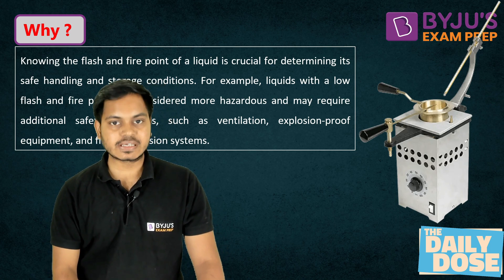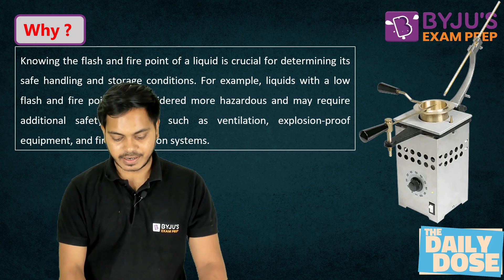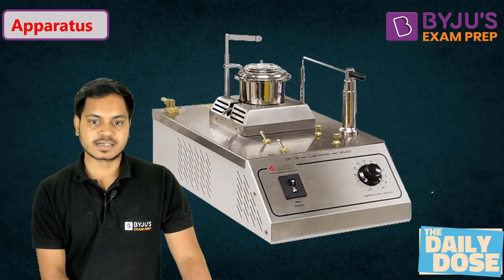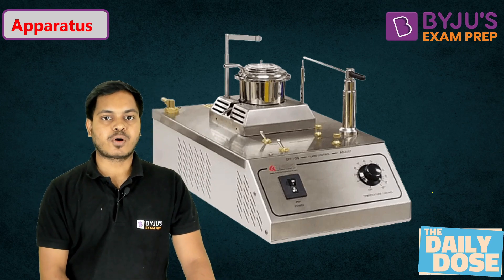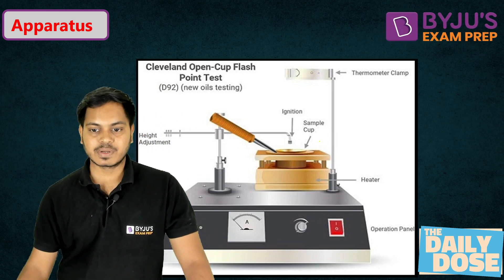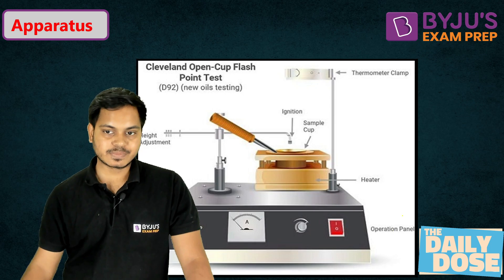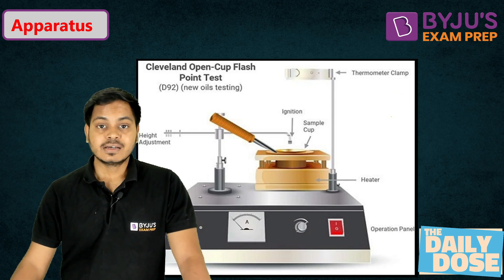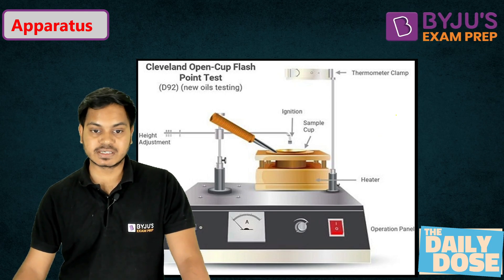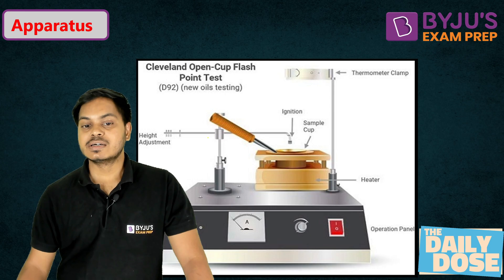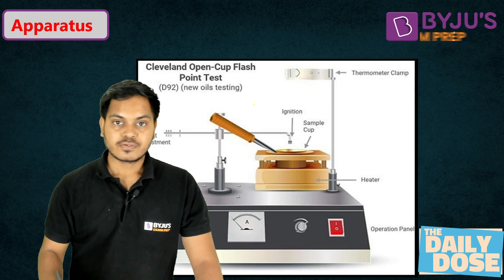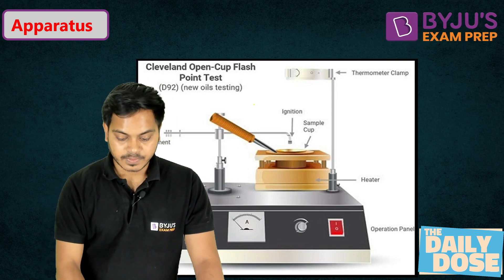Now let's understand the apparatus used in this test. We are going to use the Cleveland Open Cup apparatus. The important parts include a sample cup, a heater, an operation panel, a thermometer clamp to attach the thermometer and read the temperature, and a height adjustment mechanism to maintain the height of the ignition source from the free surface of the sample.